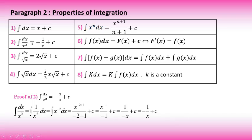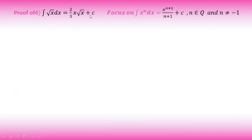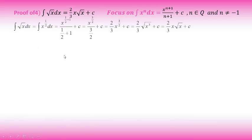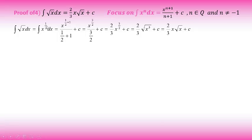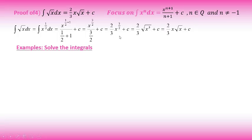Property 4: ∫√x dx. Converting √x to x^(1/2), n = 1/2. Adding 1 to the exponent: 1/2 + 1 = 3/2. Dividing by 3/2 means multiplying by 2/3. So the answer is (2/3)x^(3/2) + c. Converting x^(3/2) back to radical form: x^(3/2) = x·√x. Therefore ∫√x dx = (2/3)x√x + c.